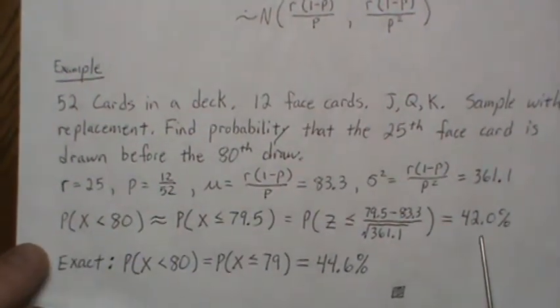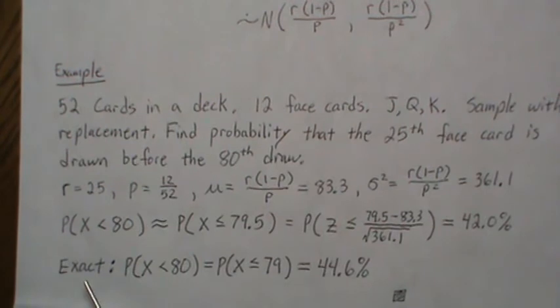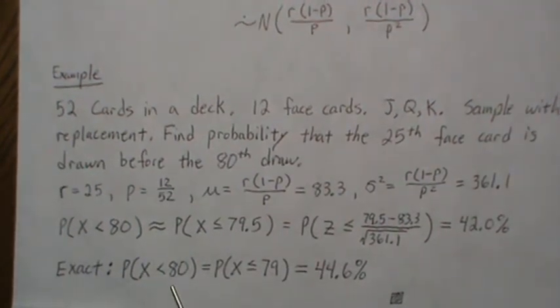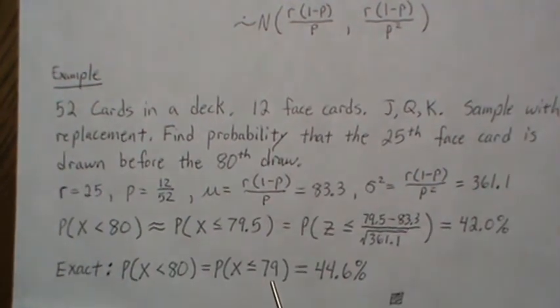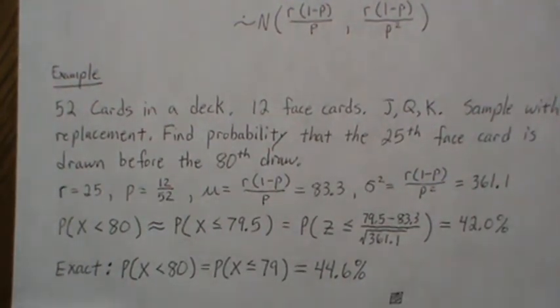Now, if we were to do this exactly, then the probability that X is less than 80 is equal to the probability that X is less than or equal to 79, which is 44.6. And that's the exact.